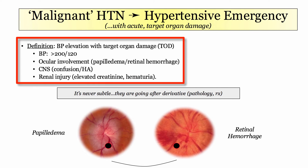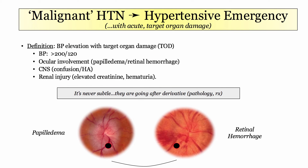A hypertensive emergency is defined as a dramatic elevation of blood pressure with evidence of target organ damage. A typical elevation would be systolic readings above 200 and diastolics greater than 120, although the level of elevation is less important than the target organ damage. Affected organs include the eyes — described by papilledema or retinal hemorrhage — CNS involvement characterized by confusion or headache, and renal involvement characterized by acute kidney injury and/or hematuria.